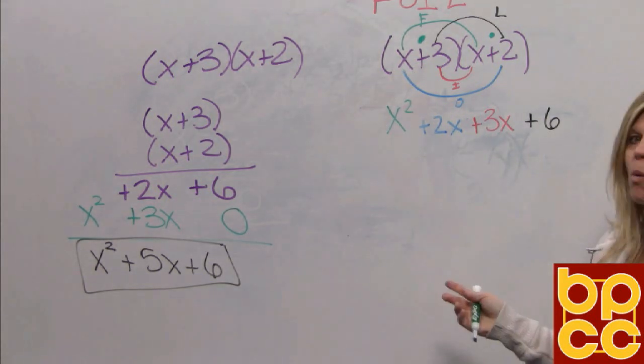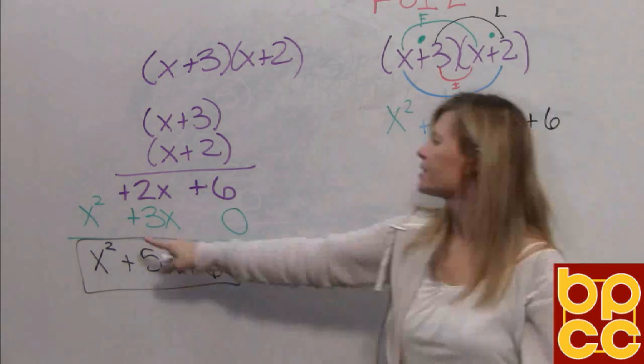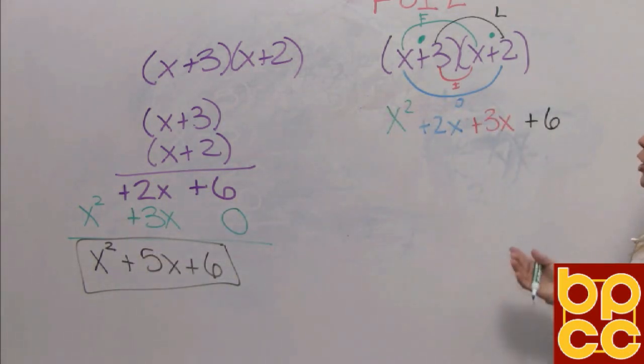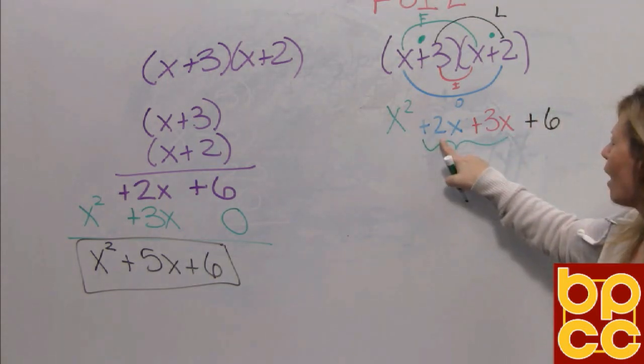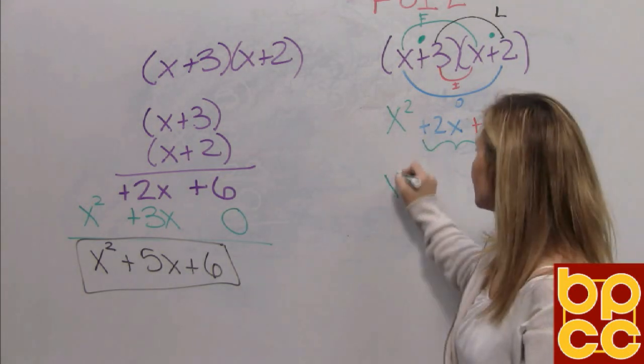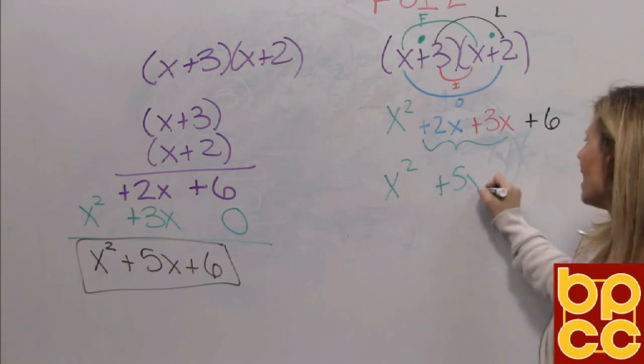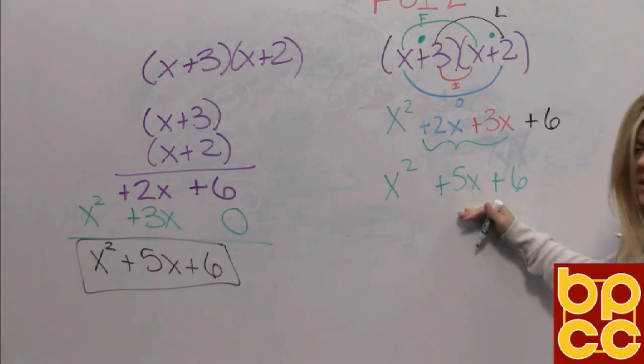First, outer, inner, and last. What I want you to notice is you have four terms here. These are the same four terms you got here. When you do FOIL, you've got to remember these terms in the middle. The outers and the inners are alike. So we have to put them together. So we bring down the x squared. 2x plus 3x is 5x. And bring down the constant 6. Look, it's the same result.